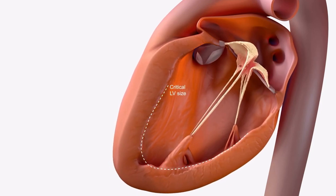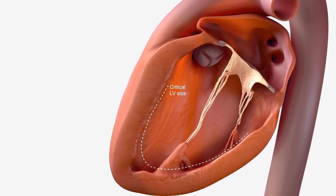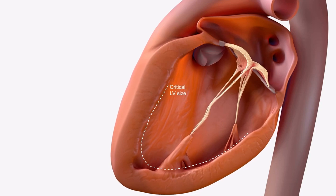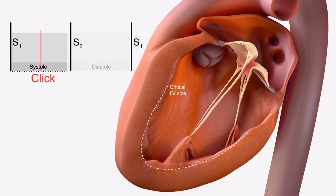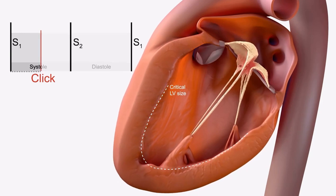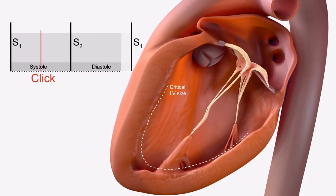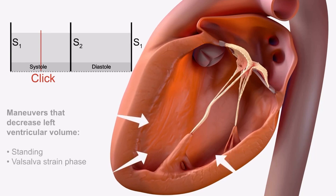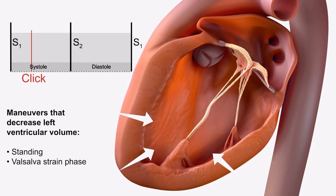Prolapse is often accompanied by regurgitation. With contraction during systole, the left ventricular cavity size progressively decreases and there is a critical point when the leaflets become overextended and prolapse into the left atrium. On physical examination, this point is recognized by an audible click caused by the cordae tendinae snapping taut.